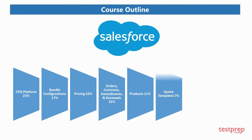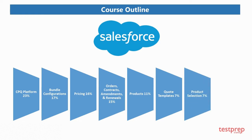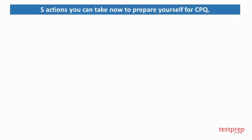Continuing the course outline: 5) Products — 11% weightage; 6) Quote Templates — 7% weightage; 7) Product Selection — 7% weightage; 8) Approvals — 4% weightage. Now here are five actions you can take to prepare yourself for the CPQ exam.